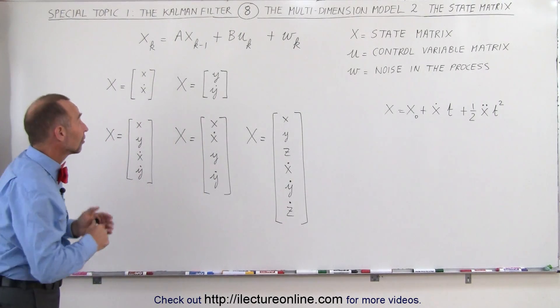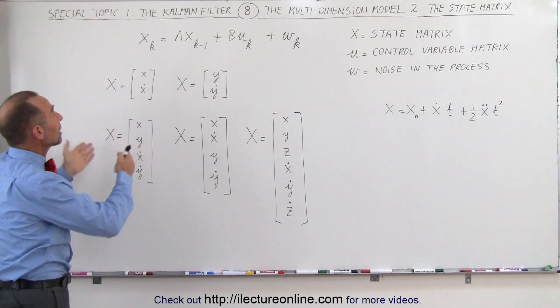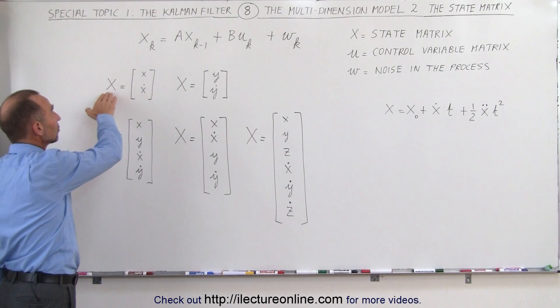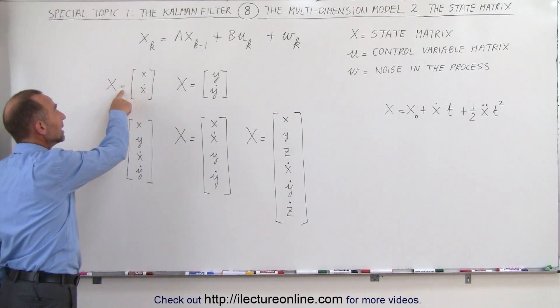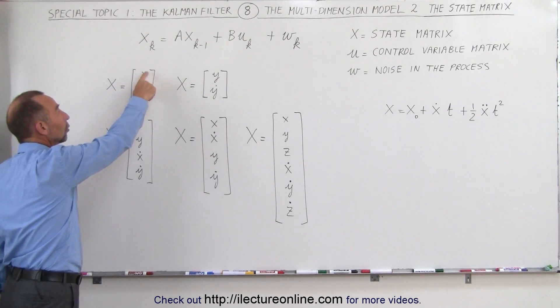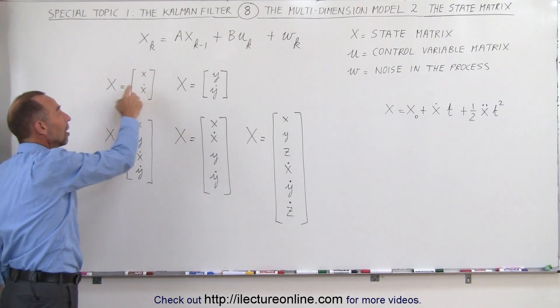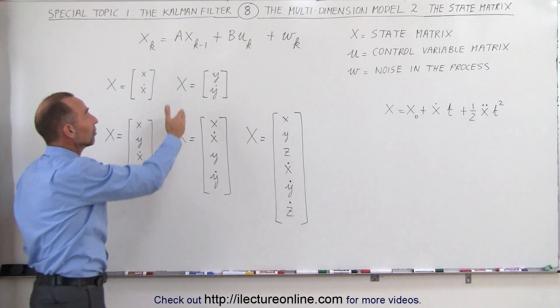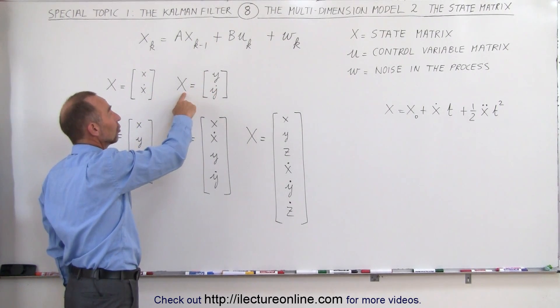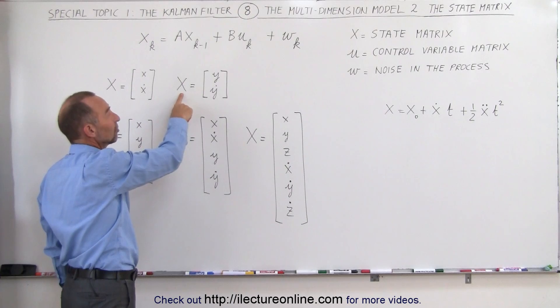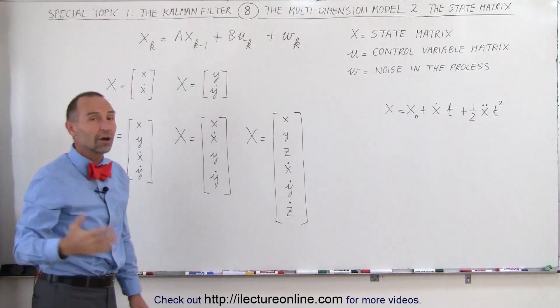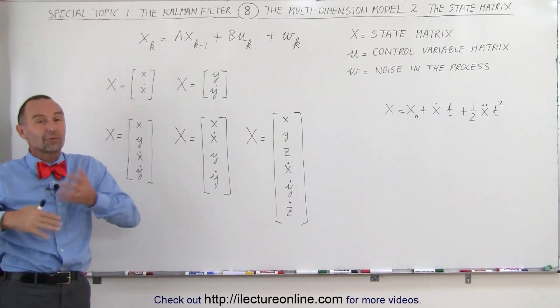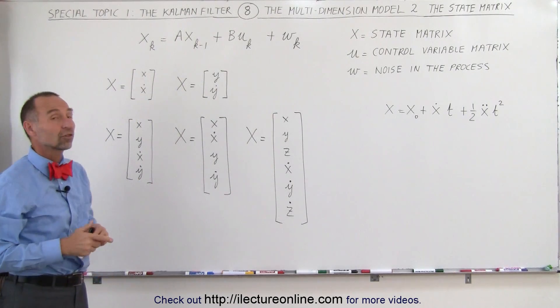What we want to do here in this video is show you what that state matrix could look like. For example, in a single dimension in the X direction, the state matrix X could simply mean that we know the position or that we're trying to track the position and the velocity of that object only in the X direction. Or we may be tracking something that's falling straight down in the Y direction. So the state matrix in that case would simply be the position and the velocity in the Y direction of that particular object we're trying to track. Of course, satellites and planes, they move in three dimensions, so we need to then express that in three dimensions.